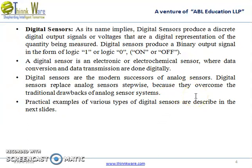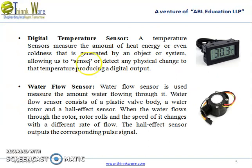Digital sensors replace analog sensors stepwise because they overcome the drawbacks of analog systems. Some practical examples of digital sensors: first is the digital temperature sensor. A temperature sensor measures the amount of heat energy or coldness generated by an object or a system, allowing us to sense or detect any physical change to that temperature, producing a digital output.